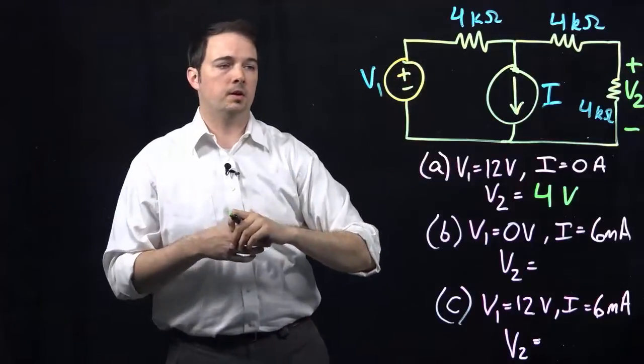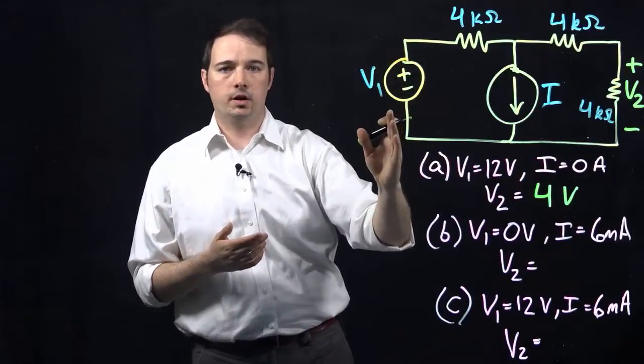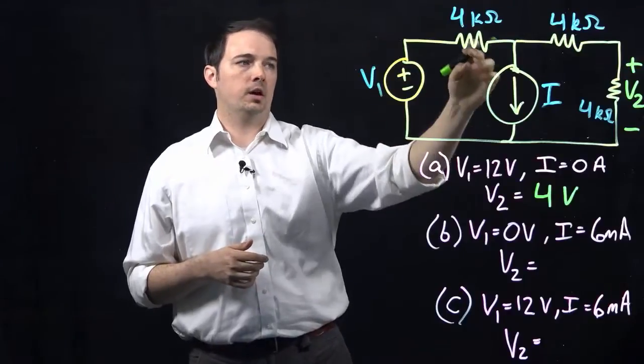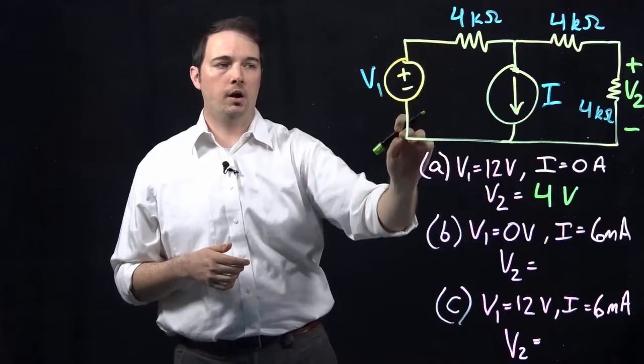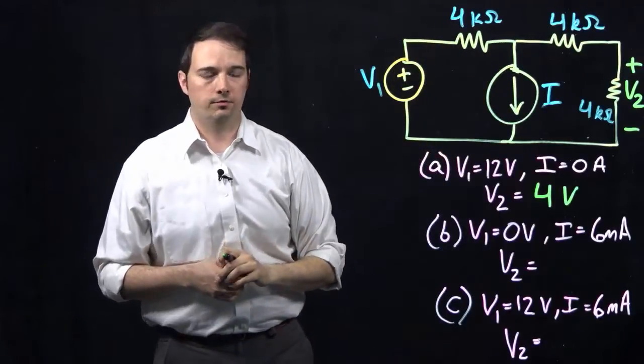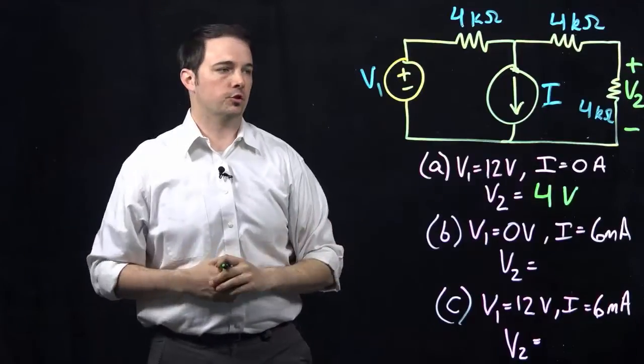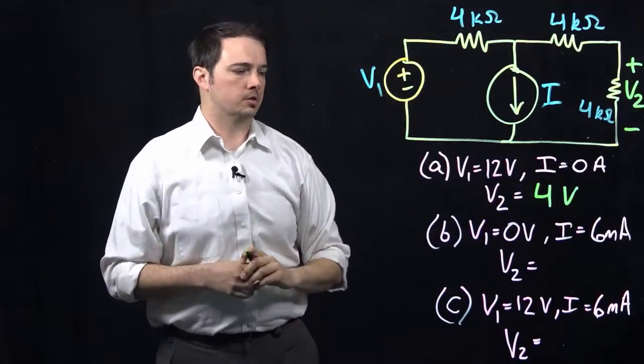So if this voltage source is set to 0 volts, then what does that mean? Well, it basically means that this is entirely shorted out. So if you want to revisualize the circuit, you can just imagine that this is one wire that connects directly across that voltage source because there is no voltage drop or voltage rise through this branch here specifically.